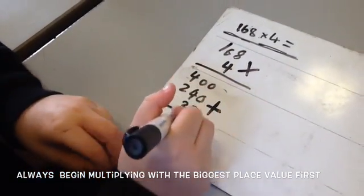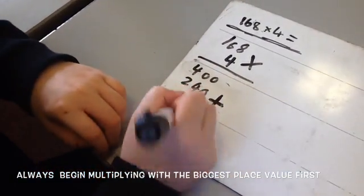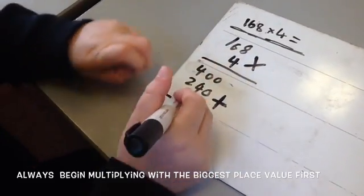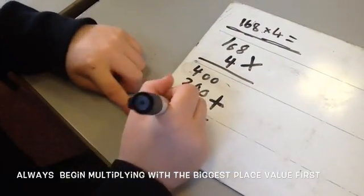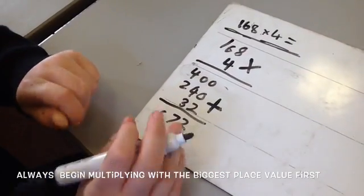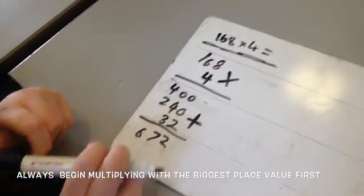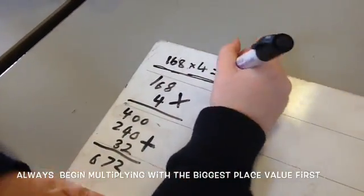0 plus 4 plus 3 equals 7. 4 plus 2 plus nothing equals 6. Now you've got your answer of 672. Put your answer up here.